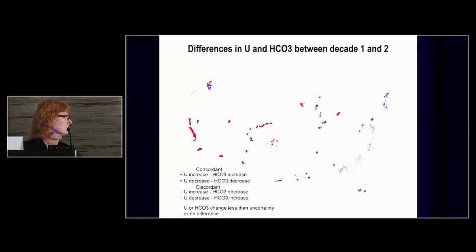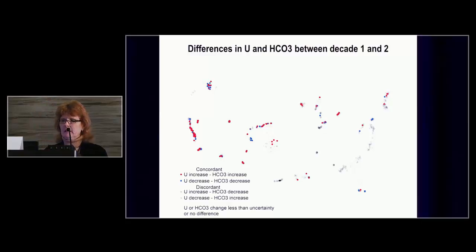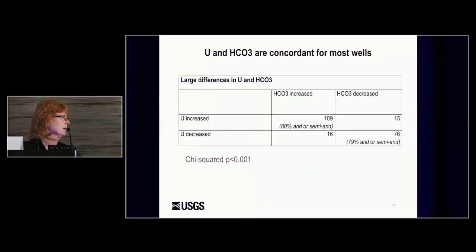The open circles represent locations where uranium and bicarbonate changes are either small differences or no change — since these were non-detect in one decade, they were non-detect in both. In table form, looking at large differences in uranium and bicarbonate, the diagonal values of 109 and 76 are the concordant samples where uranium and bicarbonate go the same direction. About 80% of those samples fall within the arid climate, with only a handful of wells in the discordant category.